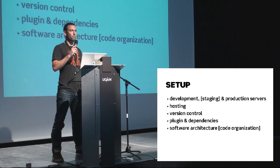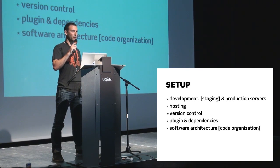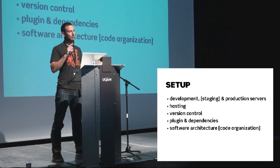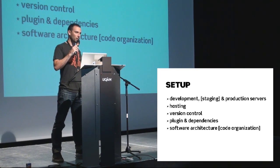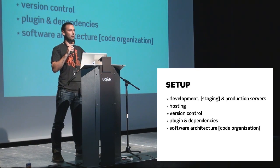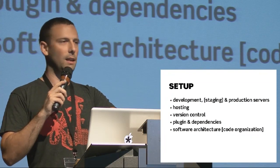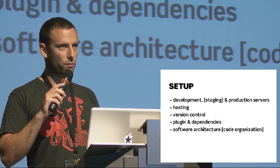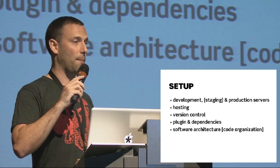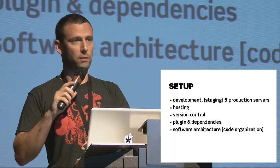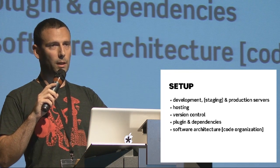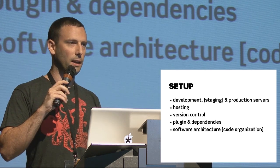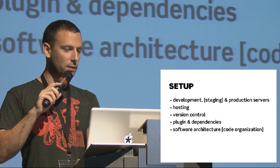Talking about setup: you're going to have a development environment because you don't want to make changes directly on a live server. When you're doing stuff for bigger teams and bigger clients and more visible projects, you need a development environment. Often there's a staging or approval environment that clients look at. Then there's production. I'll talk quickly about hosting. Version control is a really big, very fundamental thing — often the most visible difference between when you're making a quick site for yourself and when you start doing stuff commercially, especially in teams. I'll also touch on plugins and code organization.